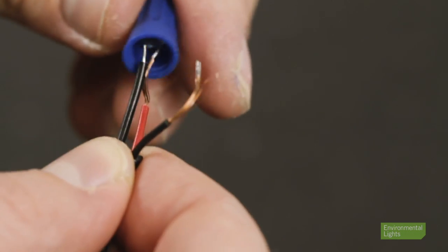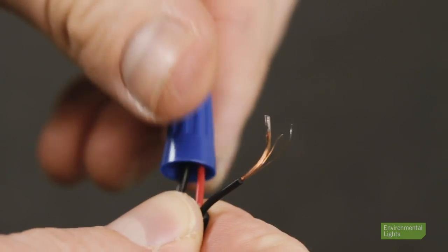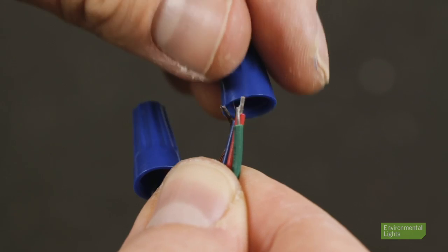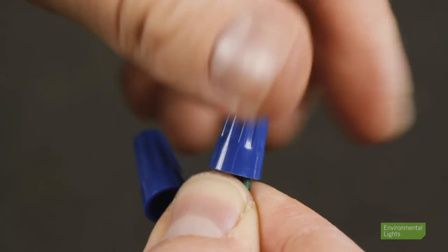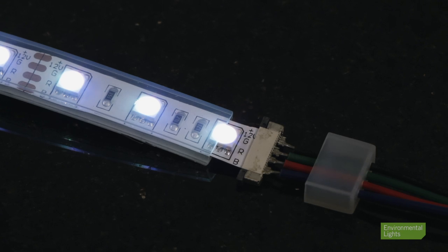Now, test your strip to make sure it lights by applying 12 volts of DC current to the positive trace and ground to the other negative trace to be sure the diodes all light. If you have a connection problem, now is the time to fix it before you put the waterproof adhesive on.